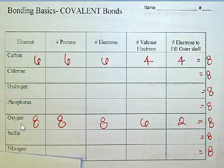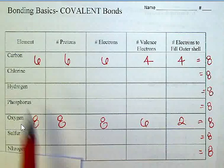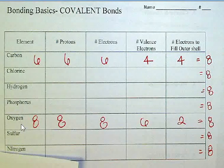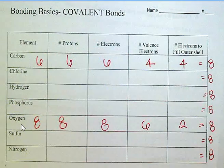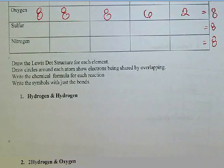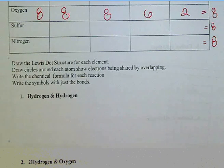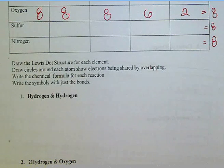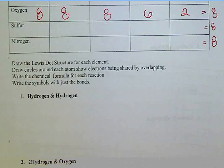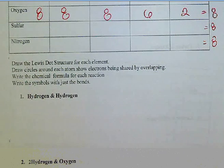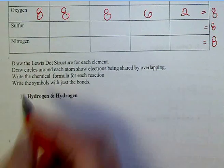Remember, everything we're going to be doing will need eight, unless it is hydrogen. Hopefully you have filled out the rest of this chart because you will need it to do the rest of this activity. Here are the directions: draw the Lewis dot structure for each element, draw circles around each atom showing the electrons that are going to be shared by overlapping, write the chemical formula, and then write the symbols with just those bonds.